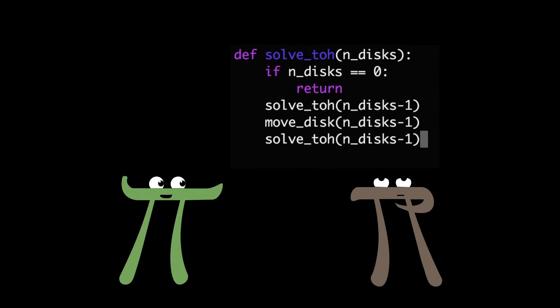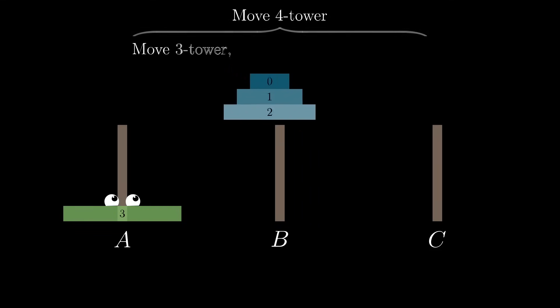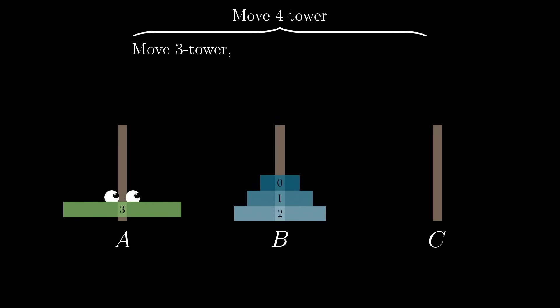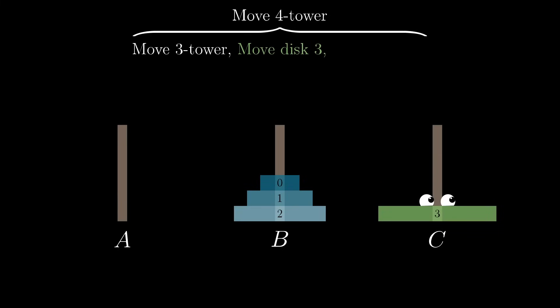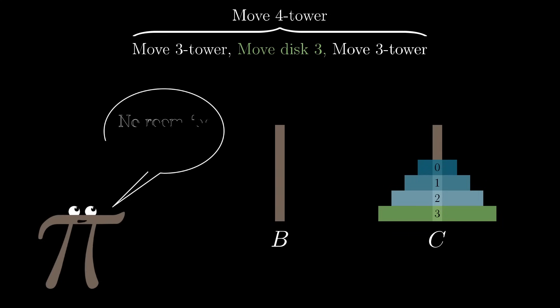And if you think about it for a bit, it becomes clear that this has to be the most efficient solution. At every step, you're only doing what's forced upon you. You have to get disk 0 through 2 off before you can move disk 3. And you have to move disk 3. And then you have to move disk 0 through 2 back onto it. There's just not any room for inefficiency from this perspective.